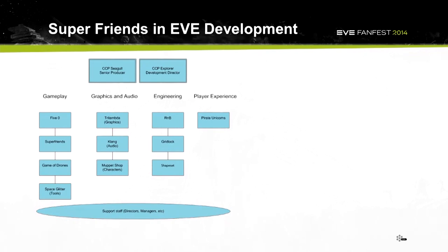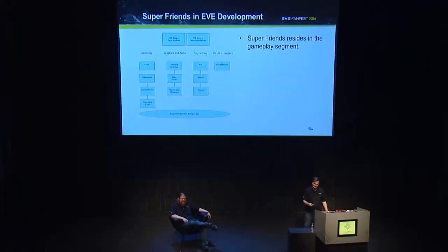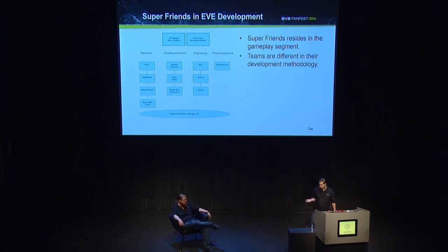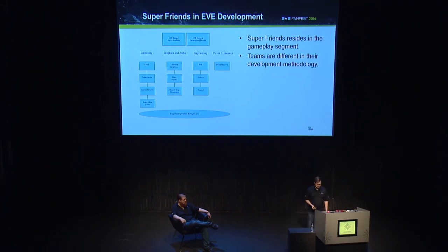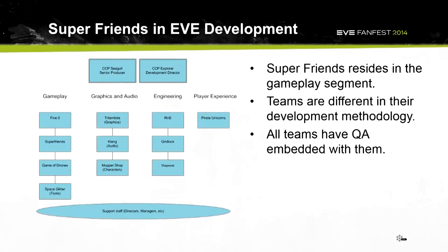Team SuperFriends sits in the gameplay segment of EVE development. We work in Agile, in Scrum. Teams in EVE development often practice different methods of Agile — some run in Kanban, some have different sprint lengths. All of these teams, though, have at least one QA embedded in the team. The QA is regarded as a development member of the team and acts as a catalyst for whole team quality.